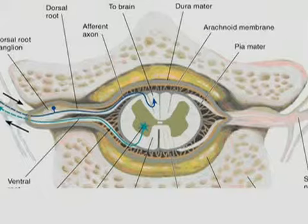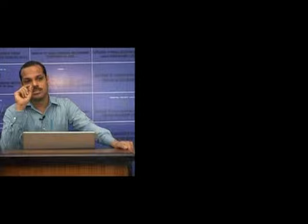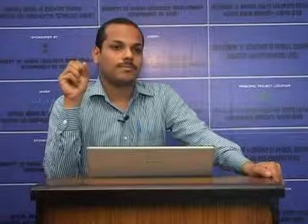CSF is formed mainly from the choroid plexus of the lateral ventricles, and a small amount from the choroid plexus of the third and fourth ventricles. It is also formed by capillaries on the surface of the brain and spinal cord.